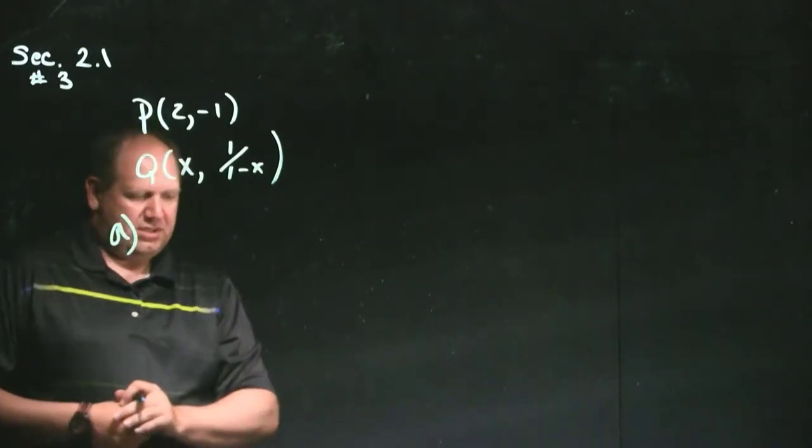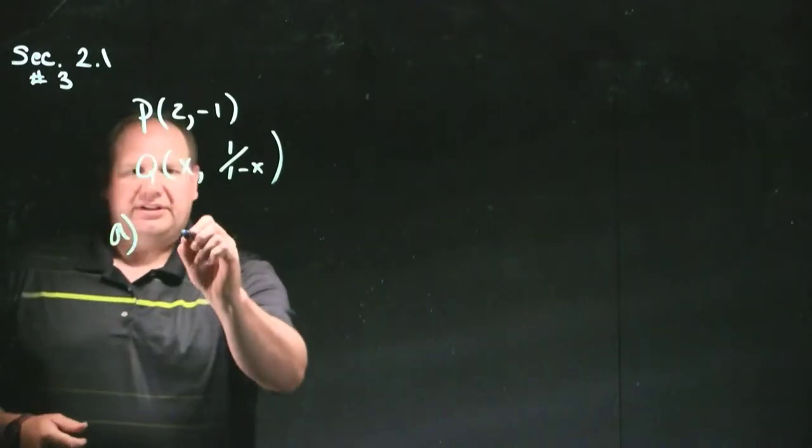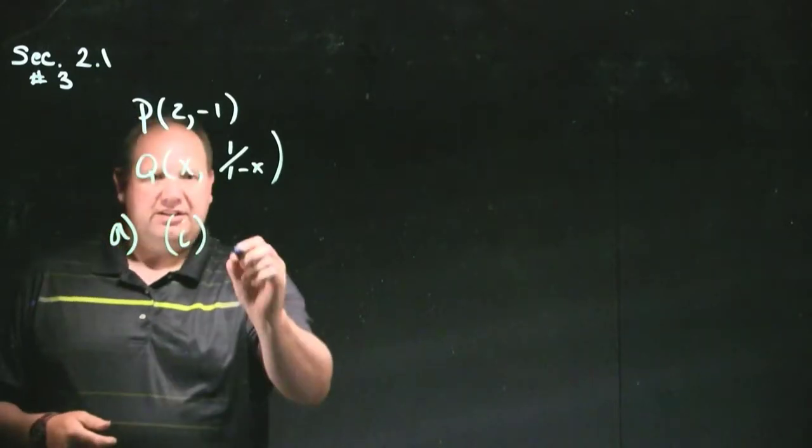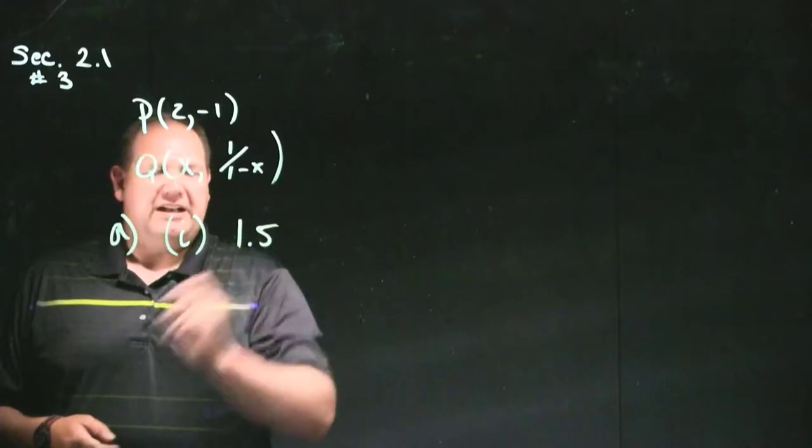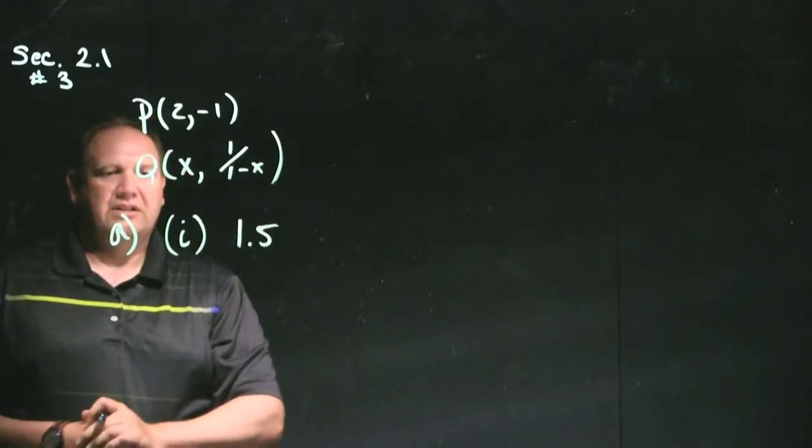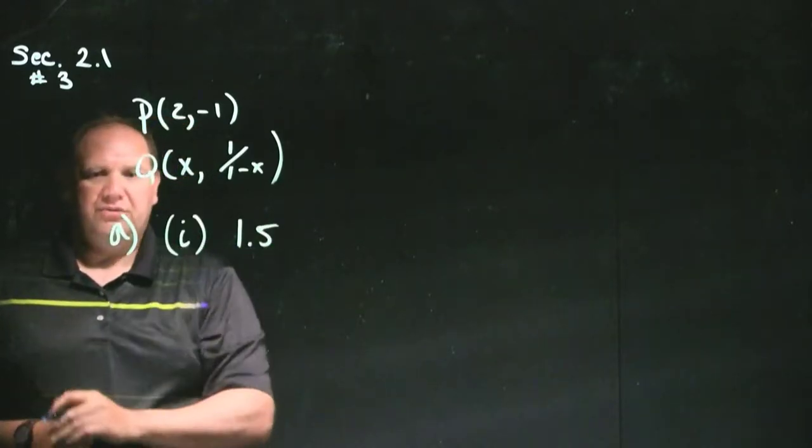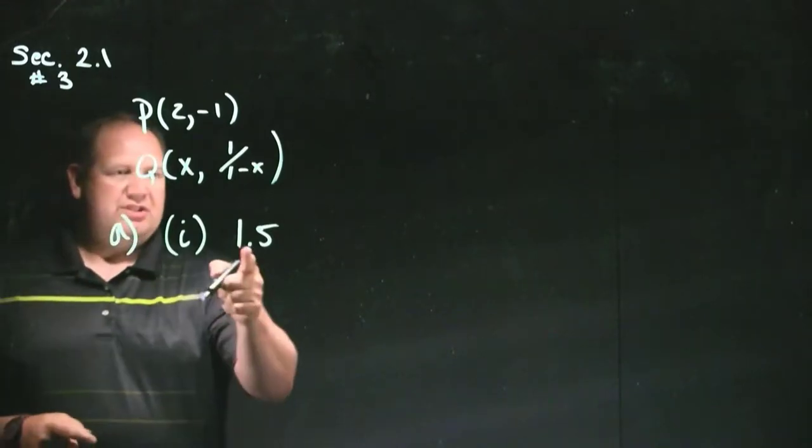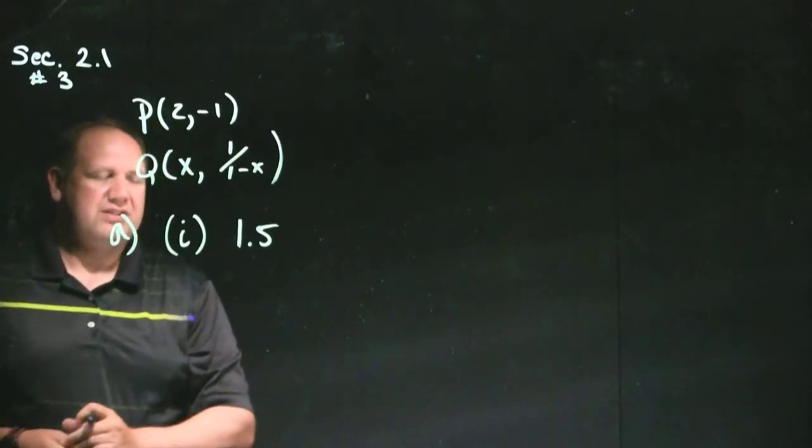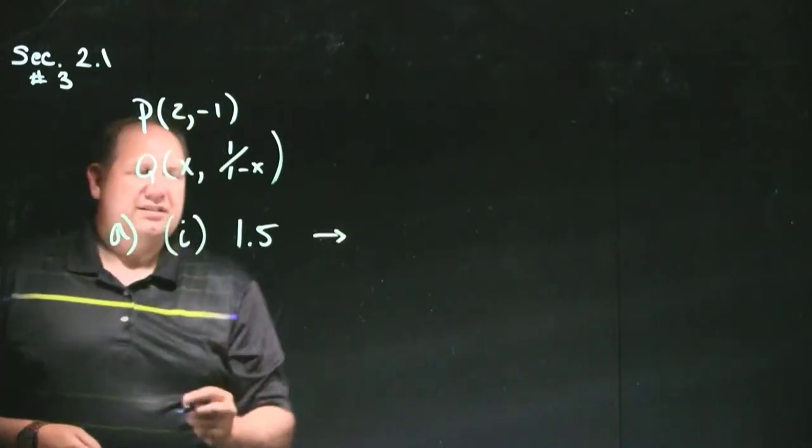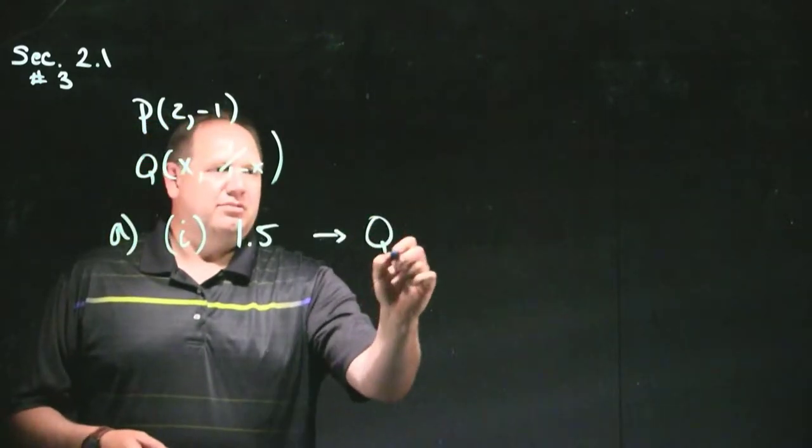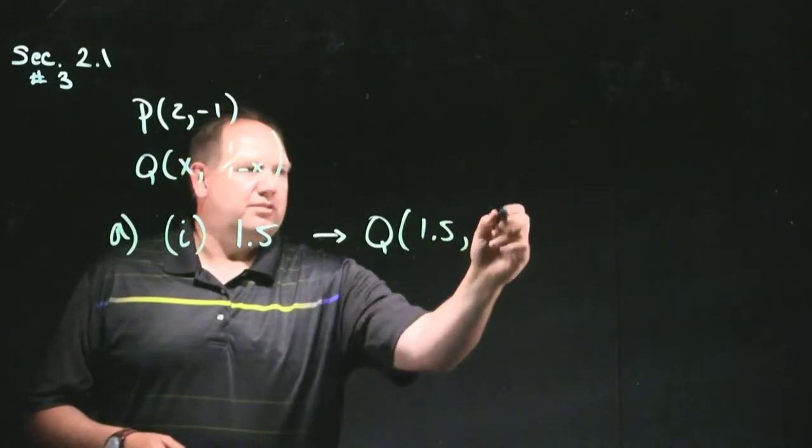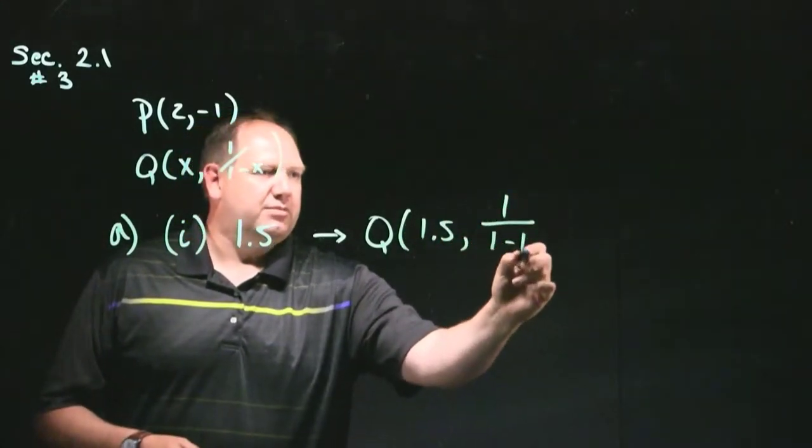Okay, so I'm going to do letter i first. And letter i says that we should use 1.5 as our value for q. So what I'm going to do then is substitute 1.5 into x.